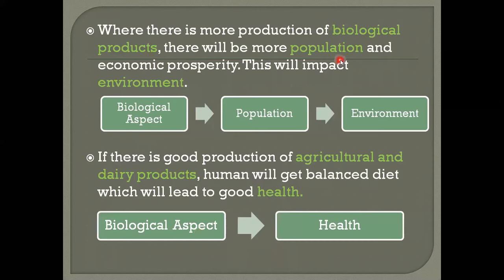Where there is more production of biological products, there will be more population — many people will like to live there — and there will be more economic prosperity. This will also impact the environment. So biological aspect affects population, and when there is overpopulation, the environment is also affected.